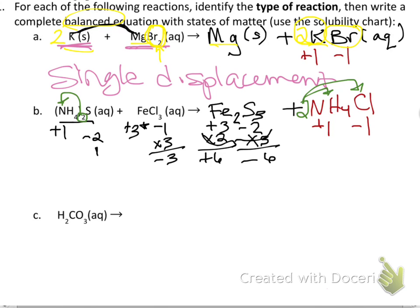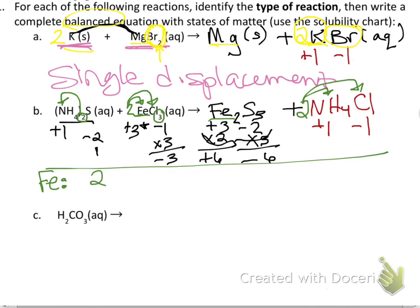Now I need to balance the equation. There are two NH₄ groups on the left, so I want two on the right as well — and that also means there are two Cl on that side. But I have one iron on the left and two iron in Fe₂S₃ on the right, so I put a 2 in front of FeCl₃. That gives 2×3 = 6 chlorines on the left, but only two NH₄Cl on the right — I don't have enough chlorine yet.